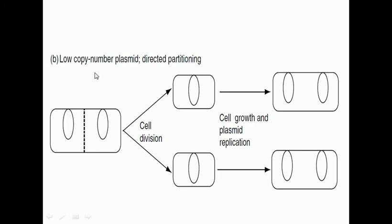Now in this case, low copy number plasmids means those plasmids which are having very few plasmids, those bacterial cells which are having very few plasmid inside their cell.